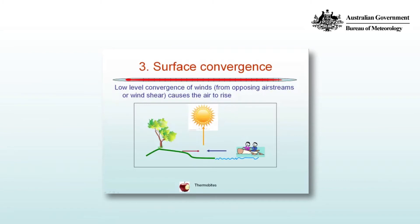A third mechanism is surface convergence. Low-level convergence from opposing air streams or wind shear causes the air to rise. Things like sea breezes and lake breezes are an example of that, and also troughs of low pressure.